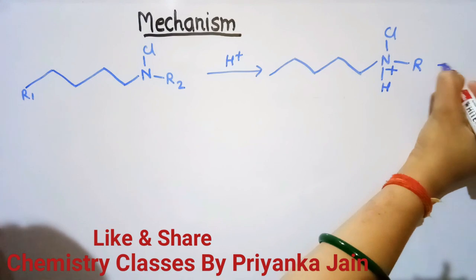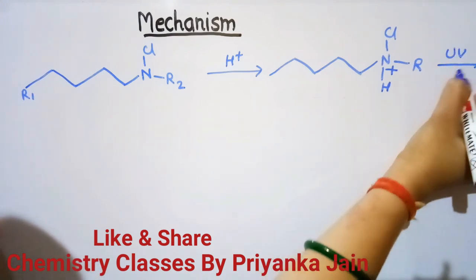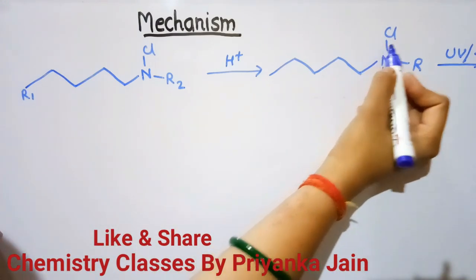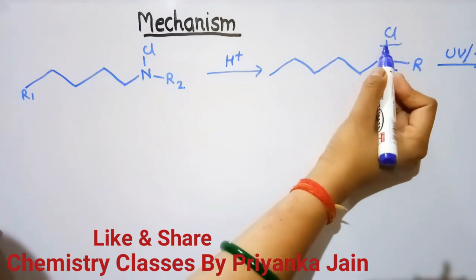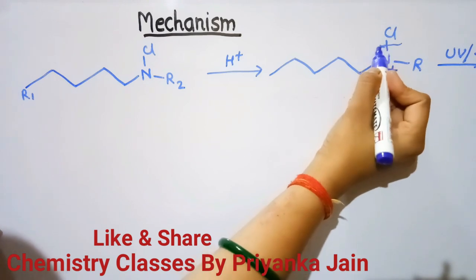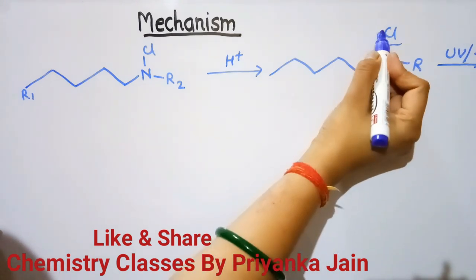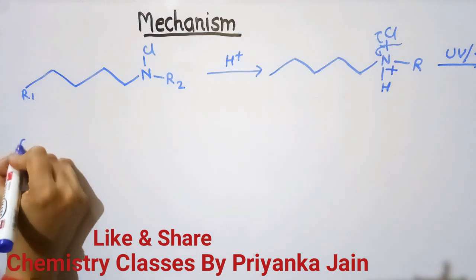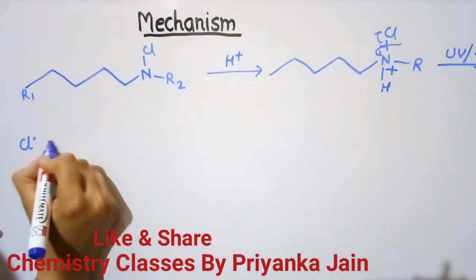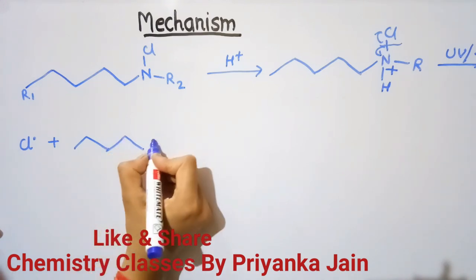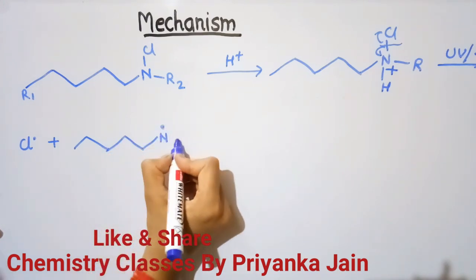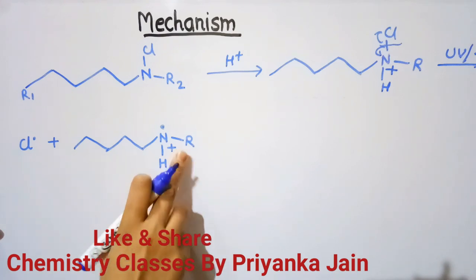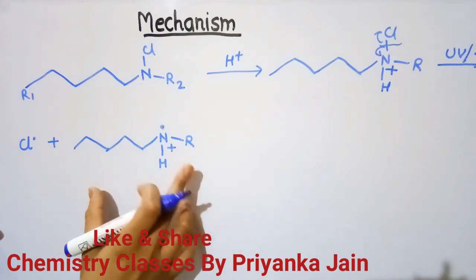Now when this compound is exposed to UV radiation or heated, there will be a homolytic fission of the N–Cl bond. Homolytic fission means one electron goes to nitrogen and one electron goes with the chlorine. So we are getting two different radicals: a chlorine radical and a nitrogen-centered radical cation.